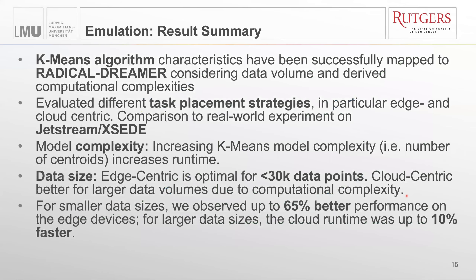To summarize our evaluation, we showed that we were able to map the k-means algorithm to the RADICAL Dreamer emulation toolkit. We were able to evaluate the task placement strategy, in particular in edge-centric and cloud-centric scenarios. We showed the impact of model complexity on the trade-off between the edge and the cloud, and we evaluated the impact of data sizes. Overall, the performance impact can be very significant — for example, for smaller data sizes you can gain up to 65% better performance by processing on the edge rather than in the cloud.